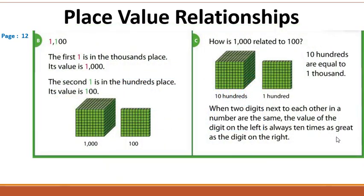Now we know the relationship between one in the thousands and one in the hundreds. Who can tell me what is the relation between one thousand and one hundred? Ahmad answered: 10 times. Excellent, Ahmad! So guys, now we know that one thousand is ten times one hundred.